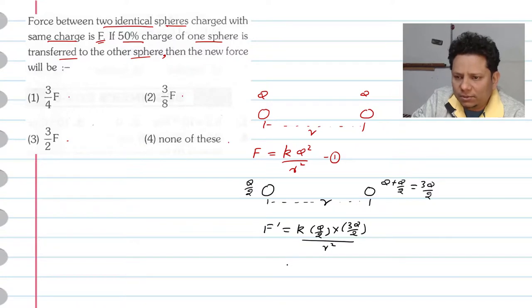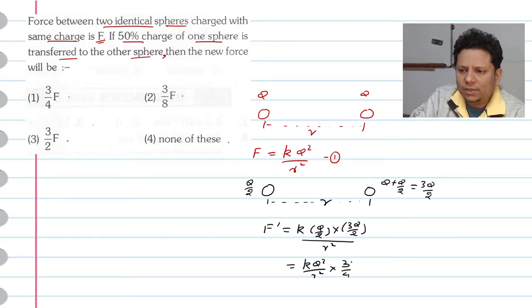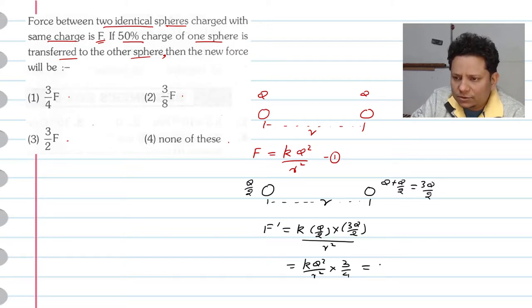So this will be equal to K Q² divided by R² multiplied by 3/4, because 1/2 multiplied by 3/2 equals 3/4. This implies that F' will be equal to 3F/4.